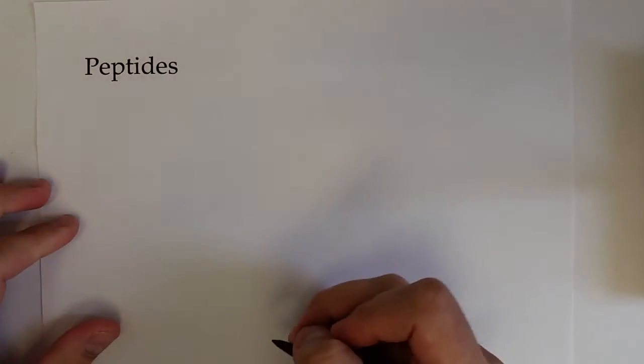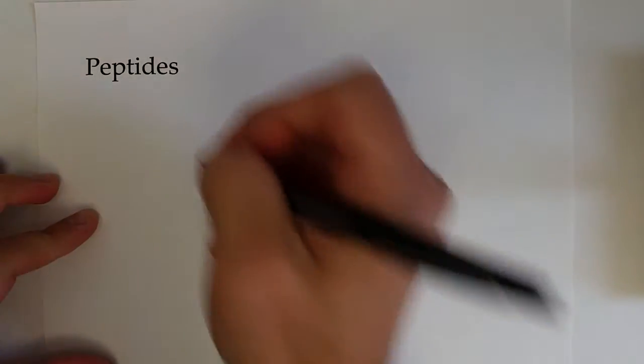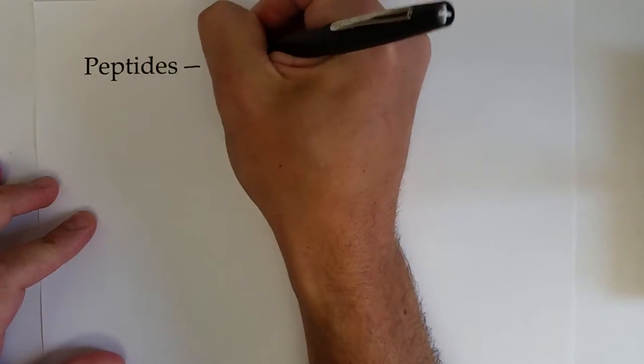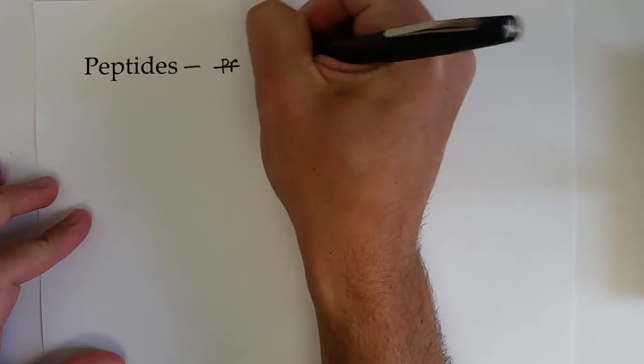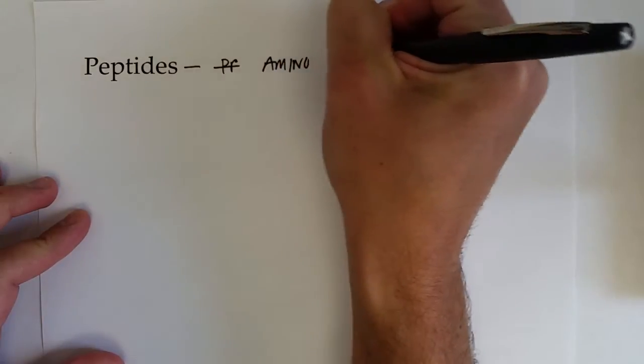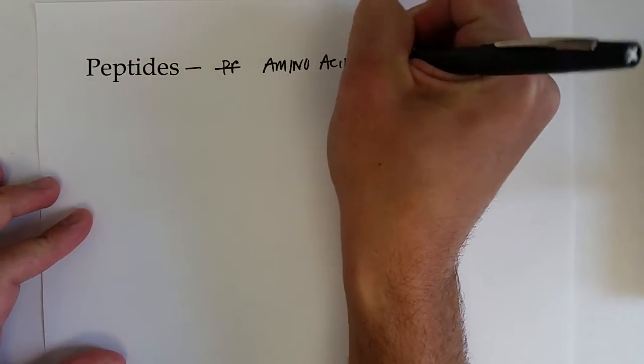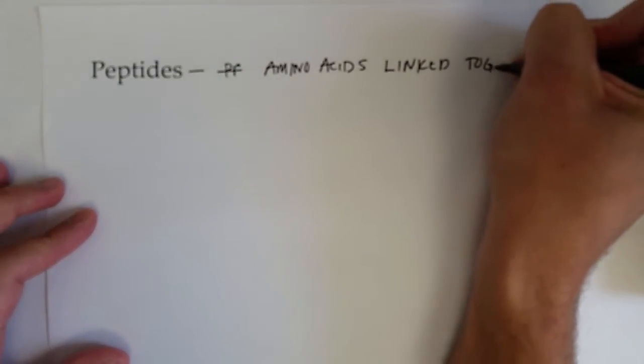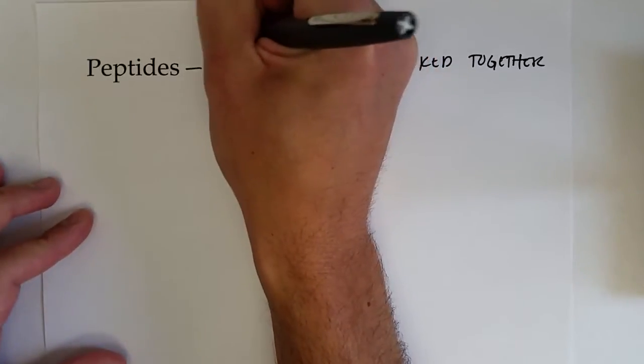Okay, so we previously stated that proteins were polymers of amino acids, but before they get big enough to be called proteins, they're called peptides. So these are amino acids linked up together, a small amount of amino acids linked together.